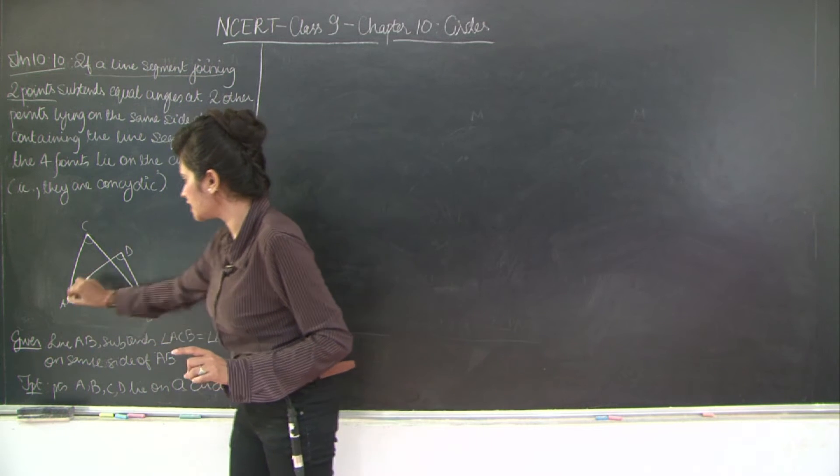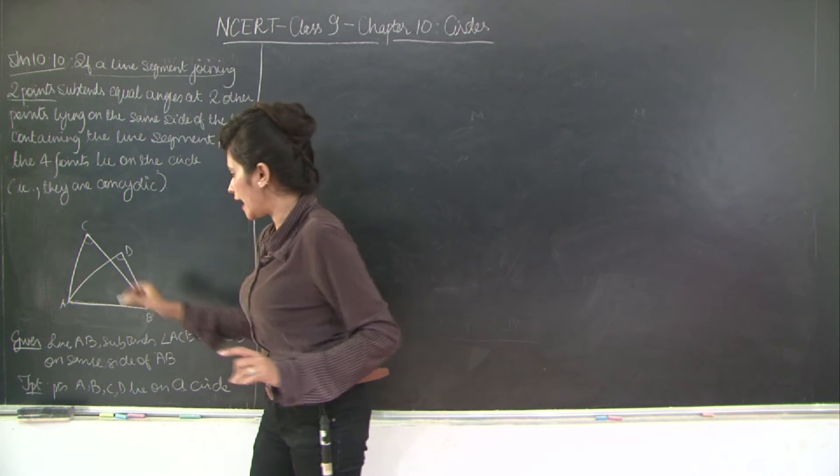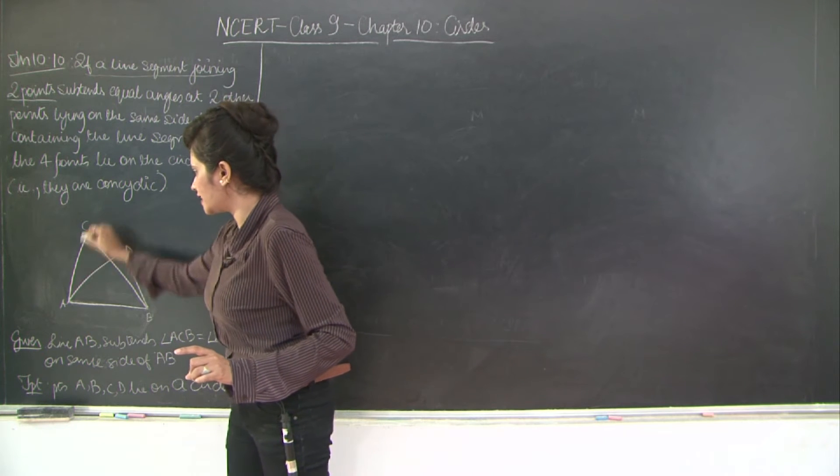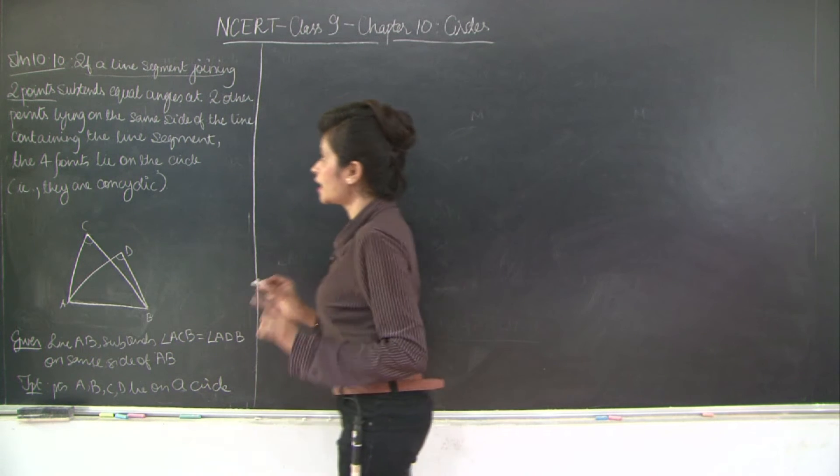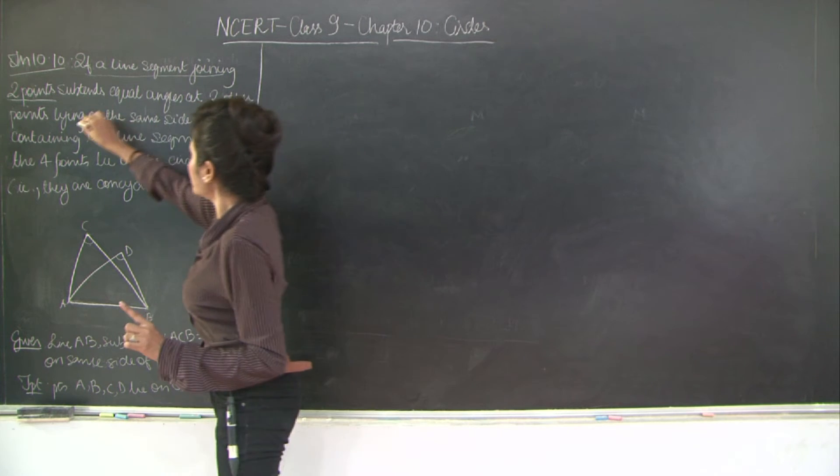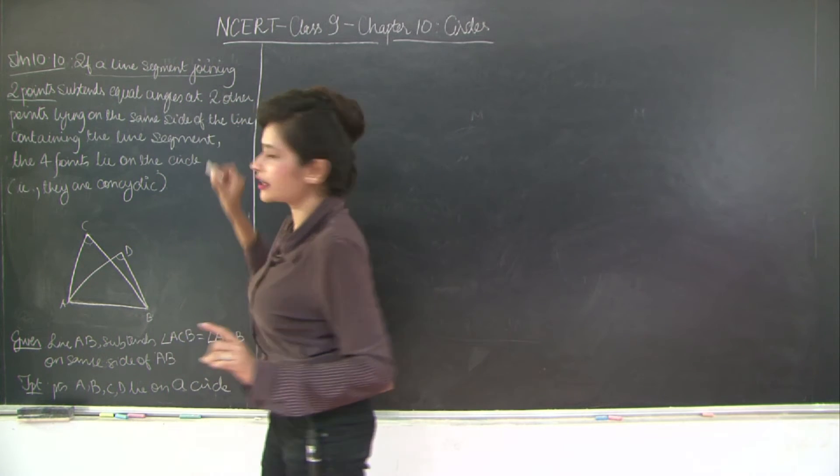You can see that A, B is subtending these two angles. And these two angles are equal. A, C, B is equal to A, D, B. Now what's the peculiarity over here is that the points lie on the same side of the line.